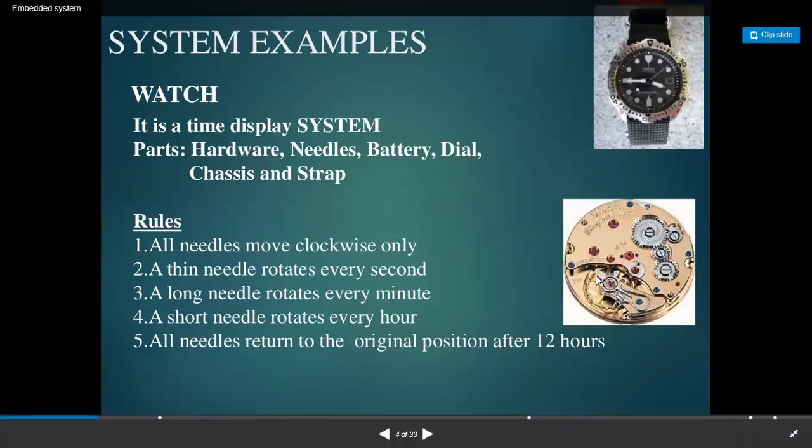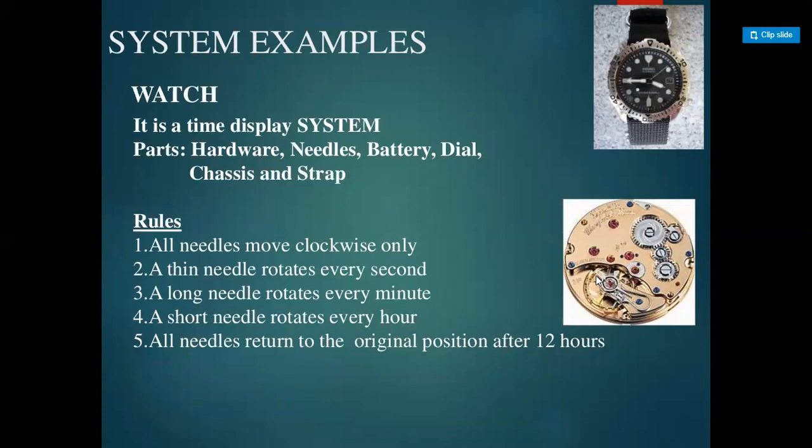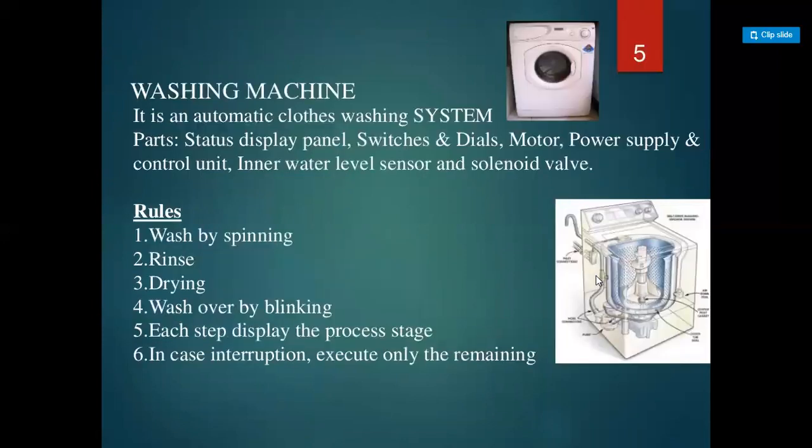For example, a watch has a time display system with hardware parts: needle, dial, battery, chassis (a metal frame onto which other parts fit), and strap. The rules are: all needles move clockwise only; a thin needle rotates every second; a long needle rotates every minute; a short needle rotates every hour; and all needles return to their original position after 12 hours. This is an example of a system based on the embedded system concept.